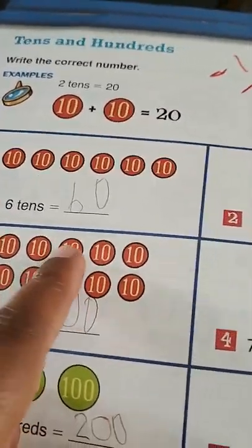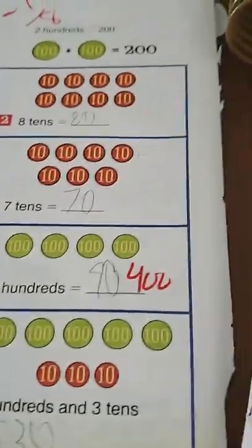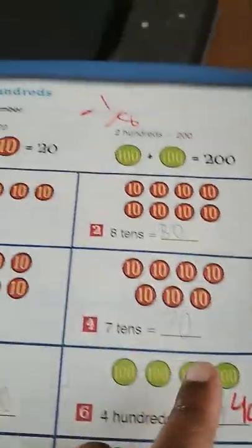Here is tens and hundreds, so they have the little tens counters and the hundred counters and he just had to add those things up. And if you can see, I've graded it so I've put in what he got wrong. This was just a review.